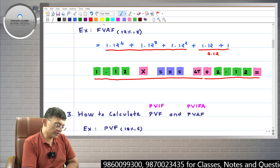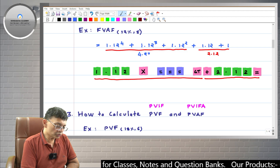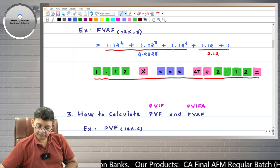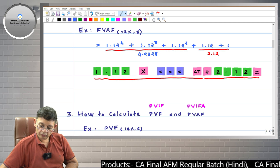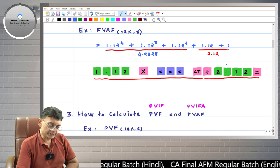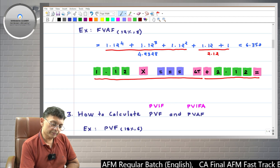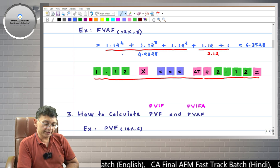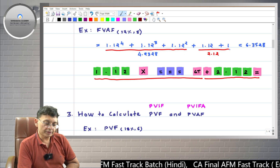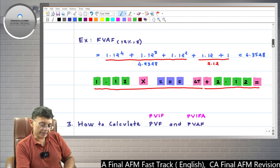Pressing GT gives 4.2328 — the sum total of 1.12², 1.12³, and 1.12⁴. Now I add 2.12: press plus, enter 2.12, press equals. The result is 6.3528. This is the answer. It means if you invest one rupee at the end of every year for five years, at the end of the fifth year you will receive 6.3528. You invested five rupees, so 1.3528 is the interest earned.